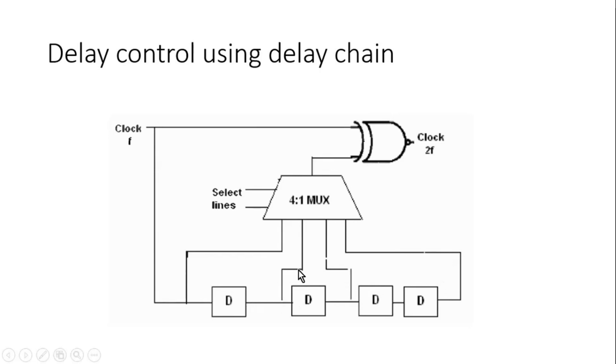An output of each delay element is applied at the input of this multiplexer. With the help of the select line we can select output of one of the delay elements and that is applied at the input of this XOR gate. Let us say if I choose to apply output of second delay element at the input of this XOR gate, then I can choose it from this select line.